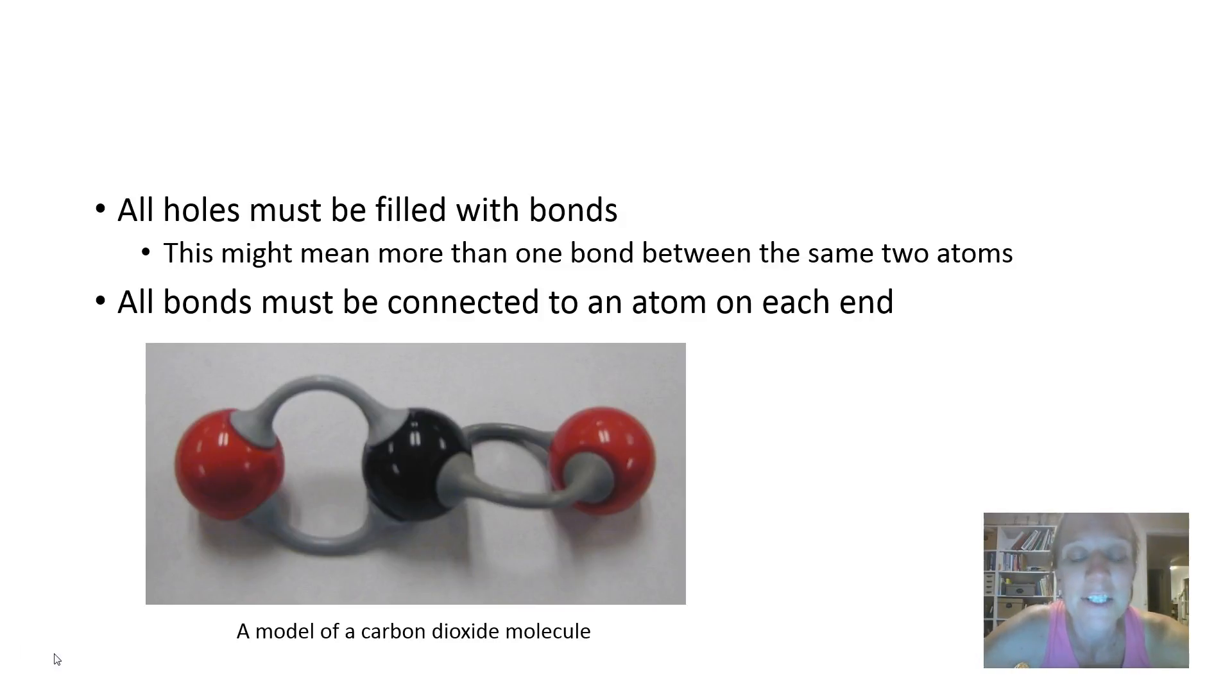This is a pretty accurate representation of how bonds actually occur between atoms of carbon and oxygen to make up a molecule of carbon dioxide. That's beyond the scope of year 9 and 10 courses, but we will explain all of that to you if you elect to take year 11 and 12 chemistry.